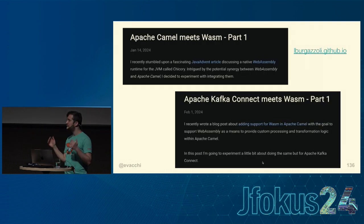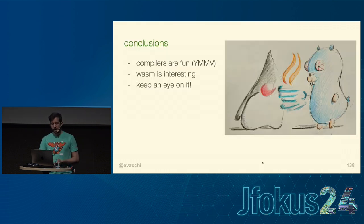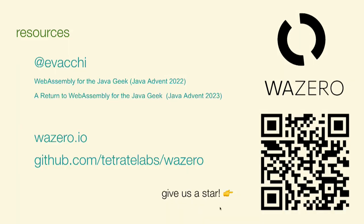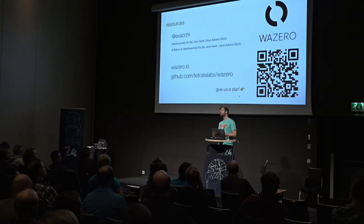The takeaway: compilers are fun — your mileage may vary, but they're fun for me. Wasm is definitely interesting, it's something you should keep an eye on. If you want to learn more, there are blog posts on Java Advent of Code 2022 and 2023 — 'WebAssembly for the Java Geek' and 'Return to WebAssembly for the Java Geek.' This is the website and the repo for WAZERO. If you're using Go, please do check it out. If you're not using Go, check it out anyway — it's a fairly approachable code base. If you feel like it, give us a star, and if you liked the session, please rate it positively. Thank you.